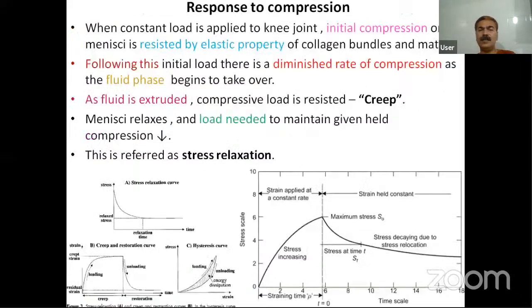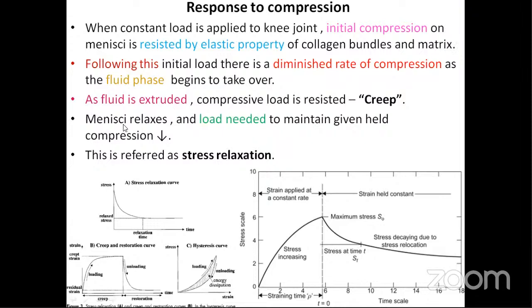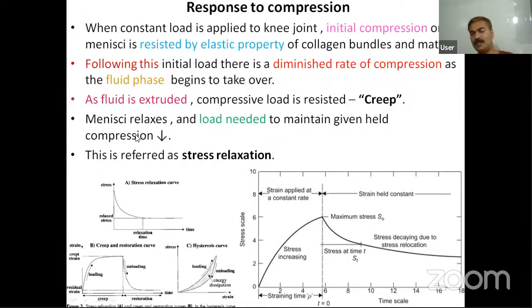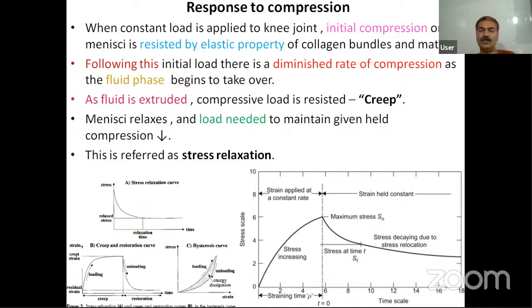When a constant load is applied to the knee joint, the initial compression on the menisci is resisted by the elastic property of the collagen bundles and matrix. Following this initial load, there is a diminished rate of compression as the fluid phase begins to take over. As fluid is extruded, the compressive load is resisted — this is called creep. At this phase the menisci relax and the load needed to maintain that compression decreases — this is known as stress relaxation. Creep and stress relaxation are very important for the menisci.